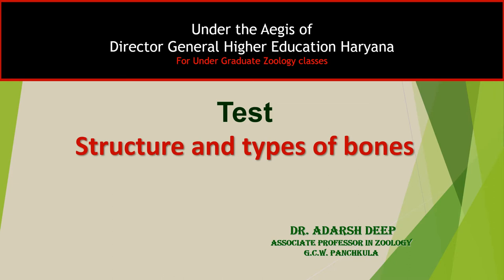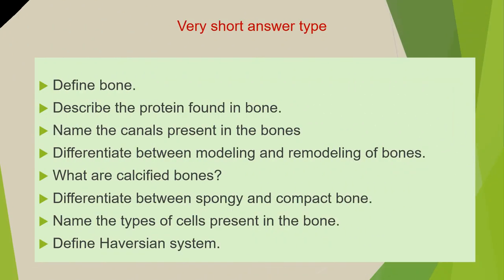Now in this session we are going to discuss how different questions may be framed from this chapter. Three types of questions may be asked. The first category of questions are very short answer type questions which you have to answer in two to three lines, and these questions will cover the first compulsory question of your paper.